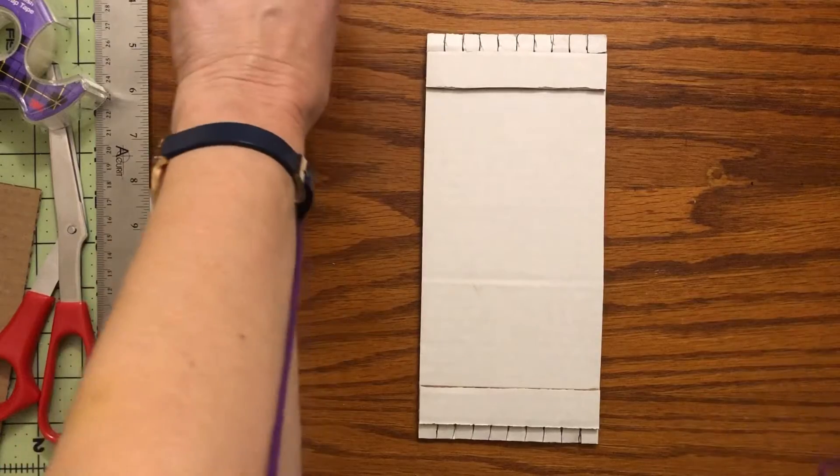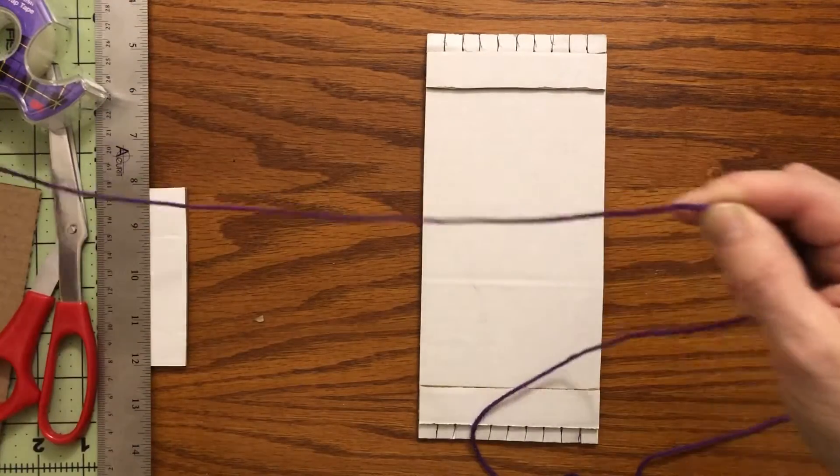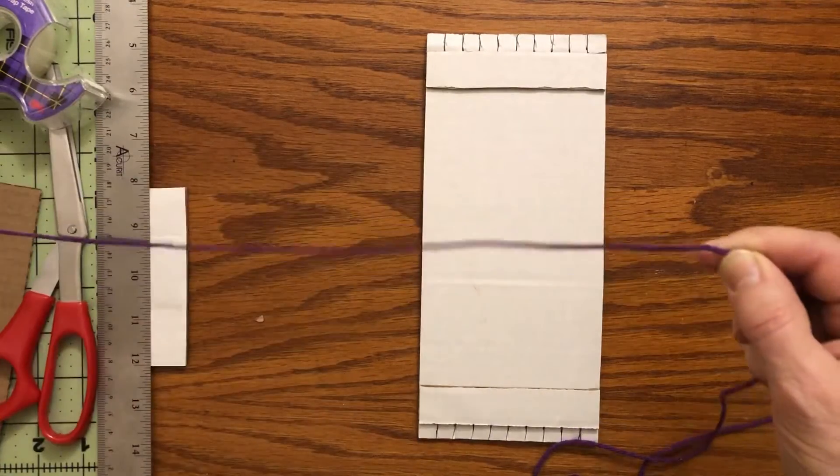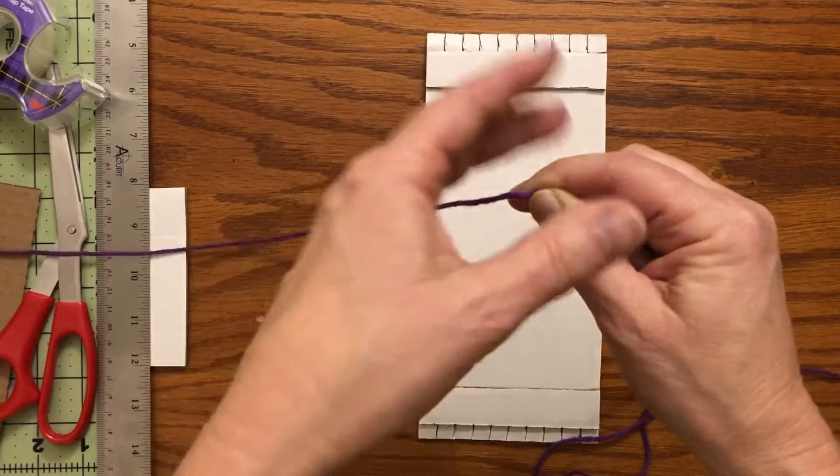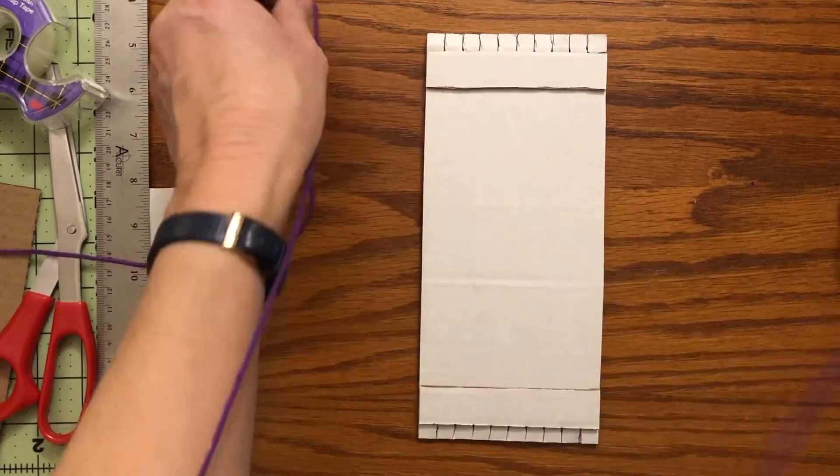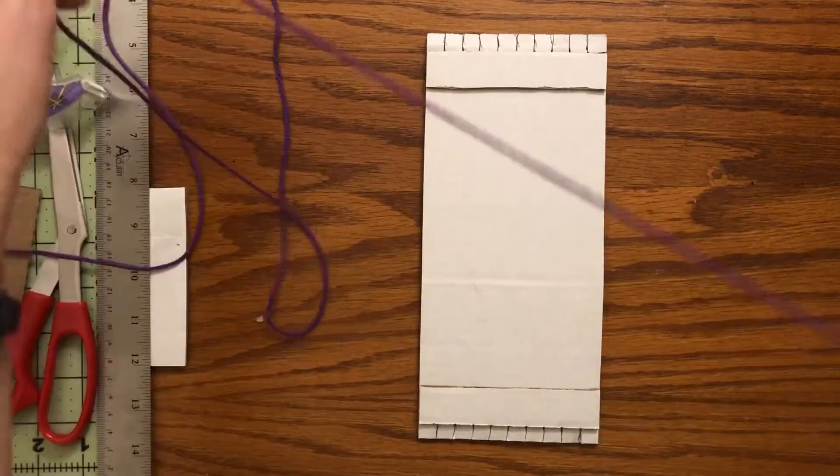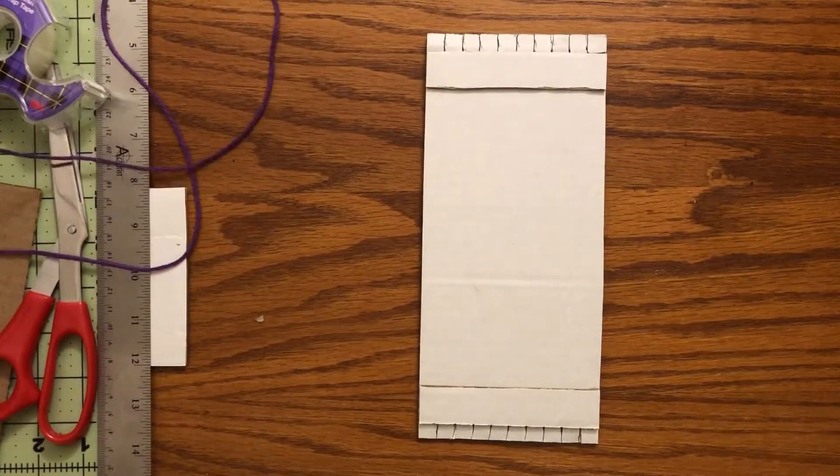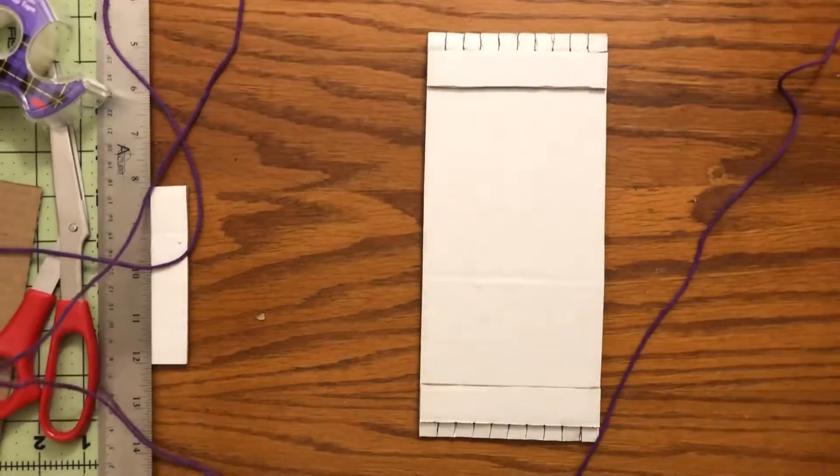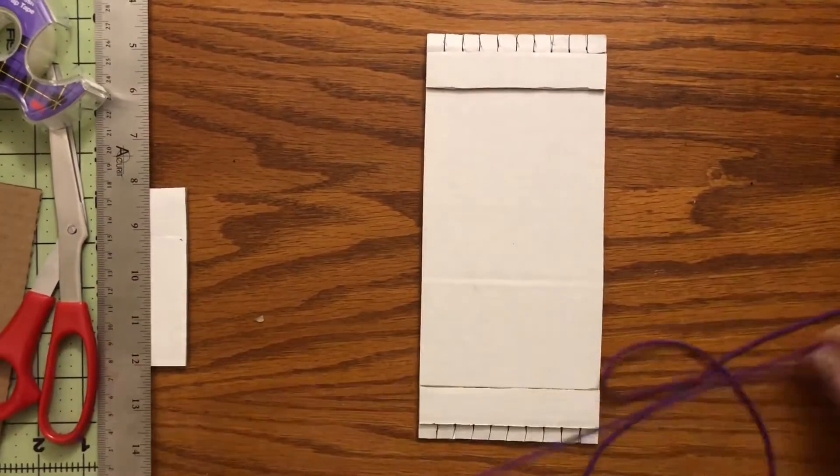Like you hold the yarn at the end and then measure, go all the way up your arm to your shoulder. So I just measured, that would be one arm's length. Then I hold it here, measure all the way up my arm again - two arm's lengths - and keep going until you have six. Six should be plenty.